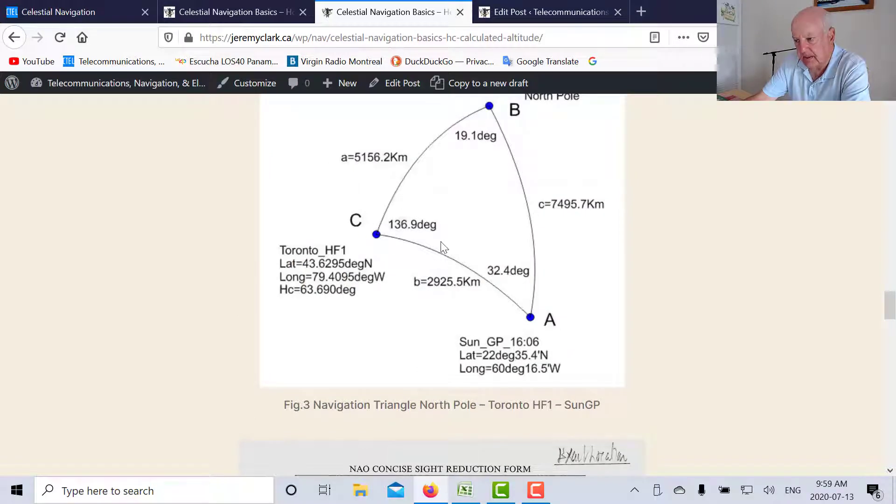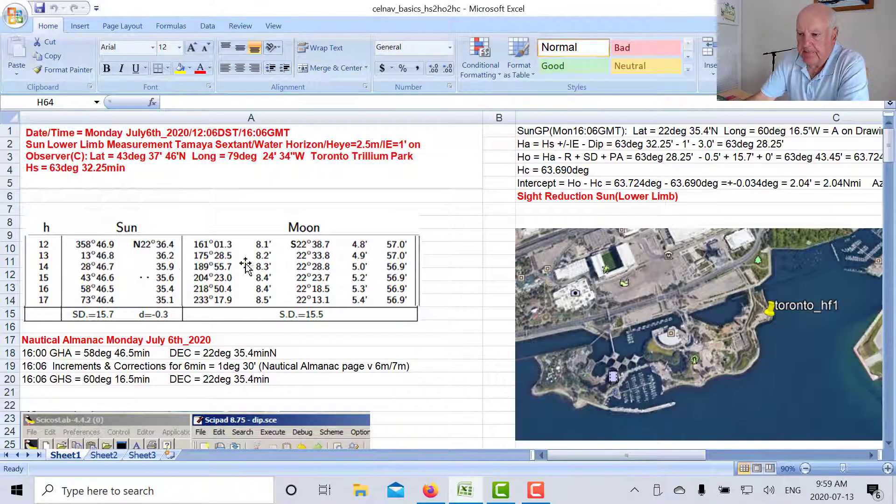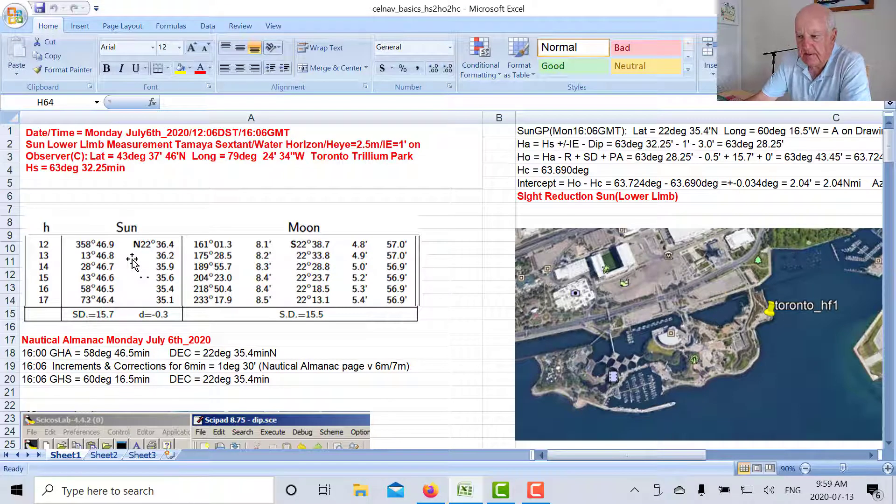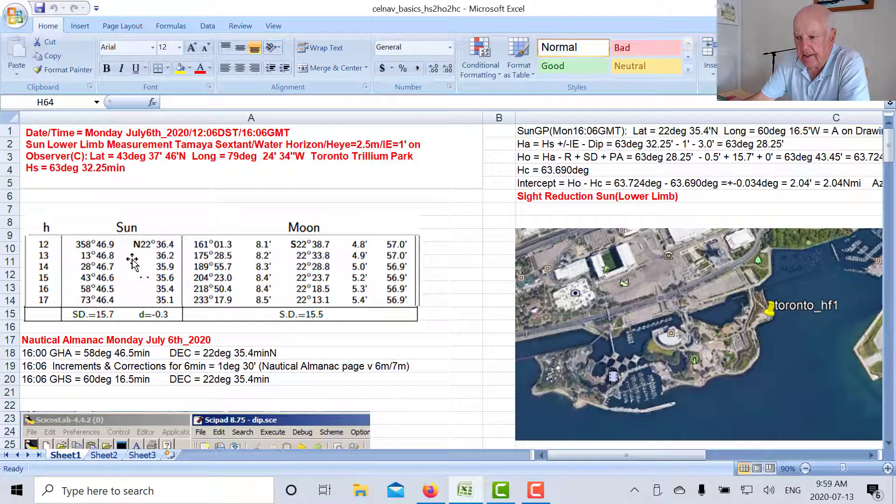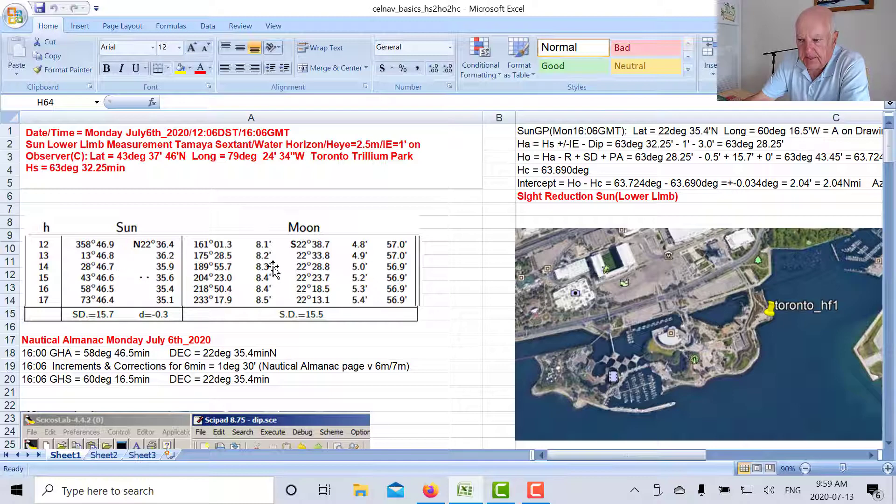Now let's look at this spreadsheet here. This spreadsheet shows us, this is a subset I'm using the online nautical almanac here because it's easier to look at the values and copy them.